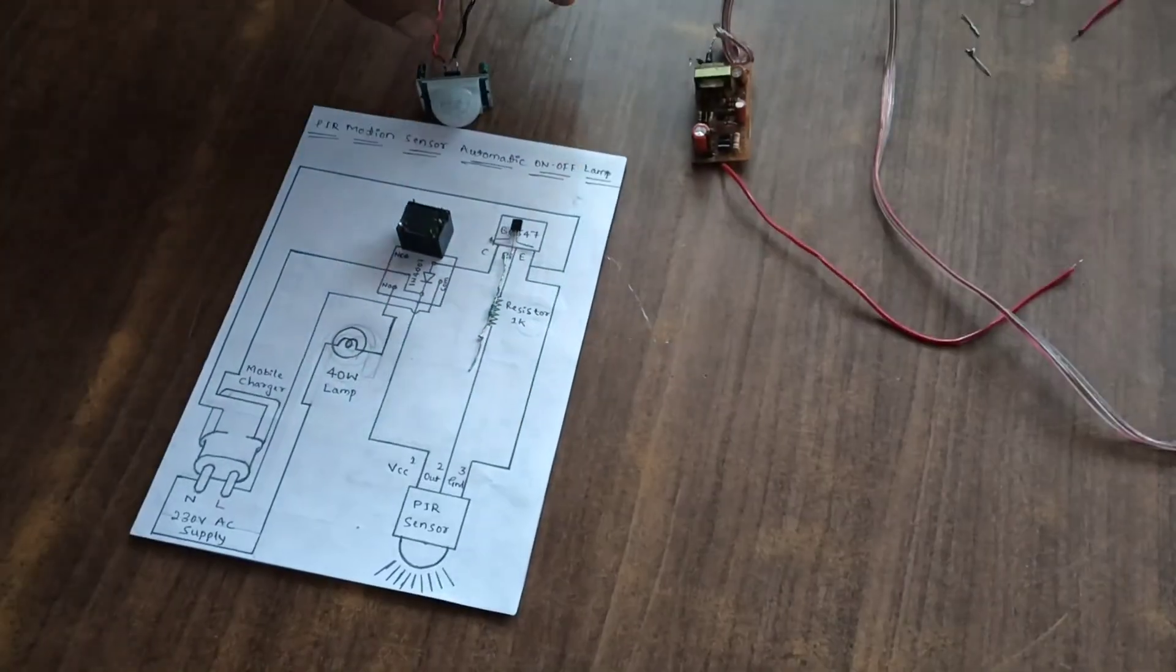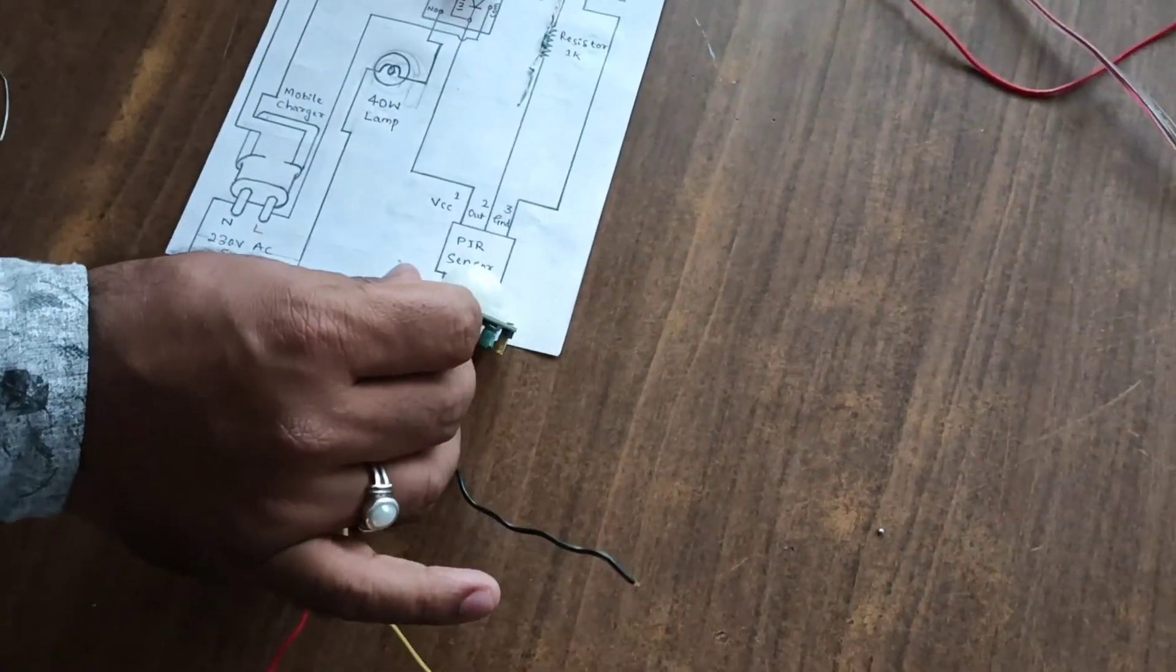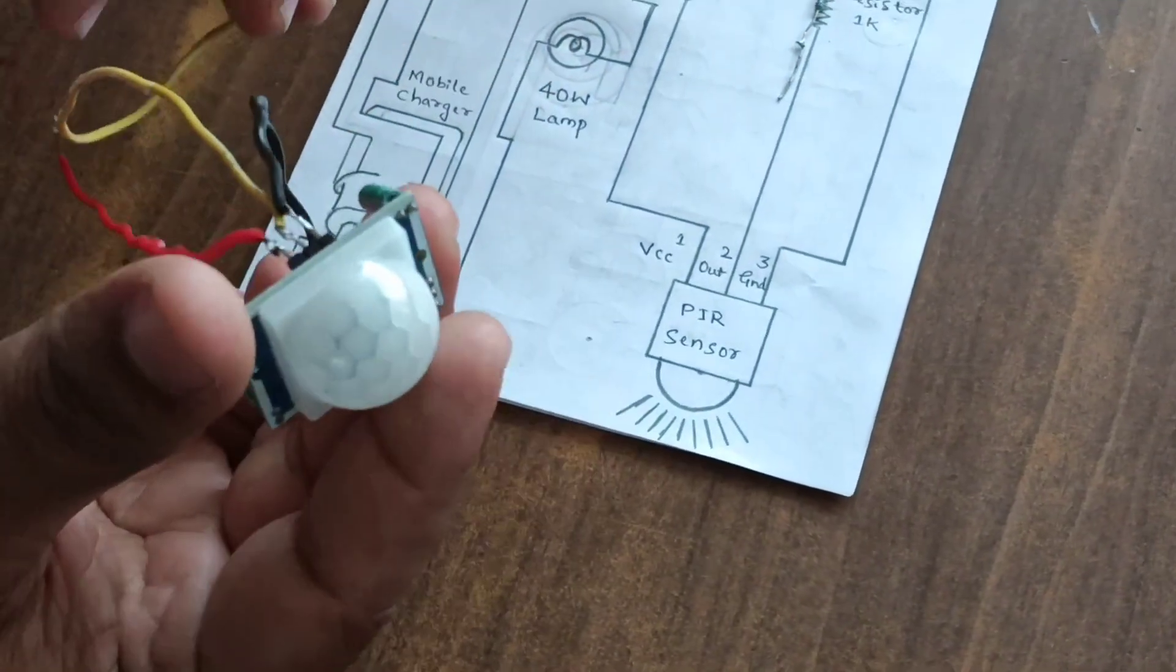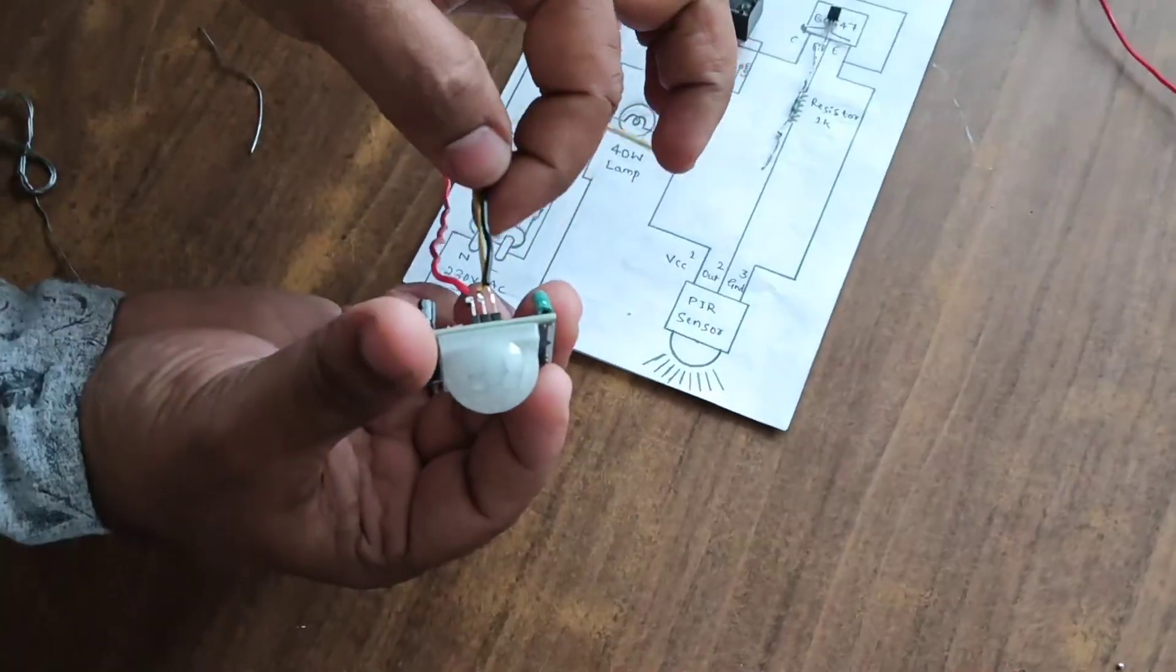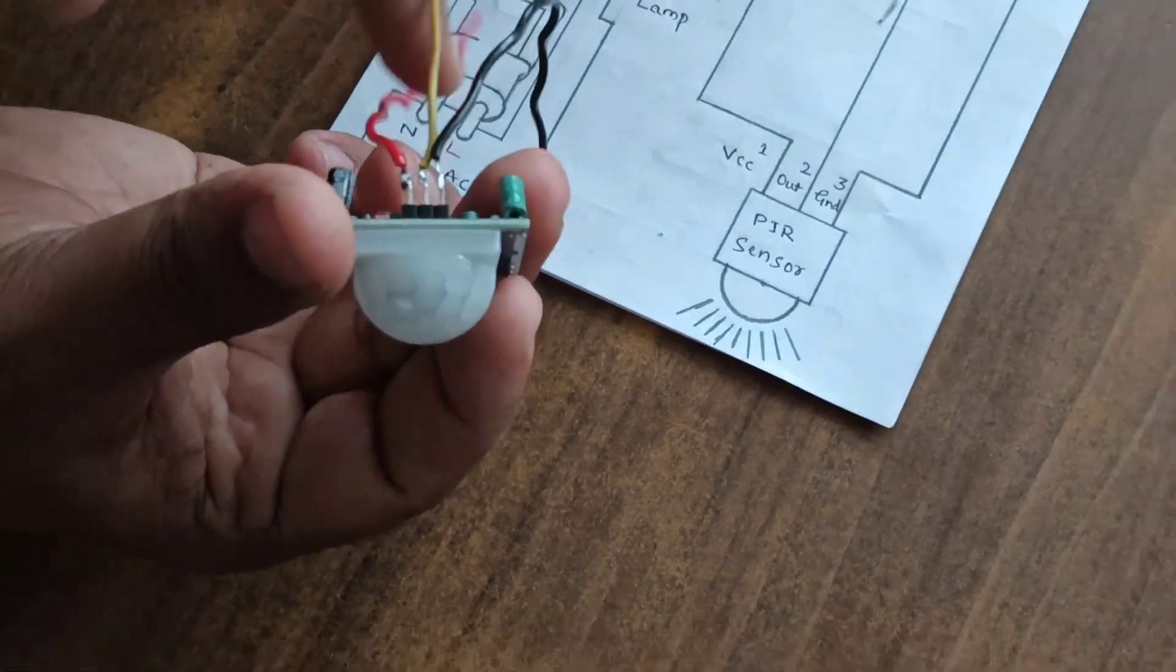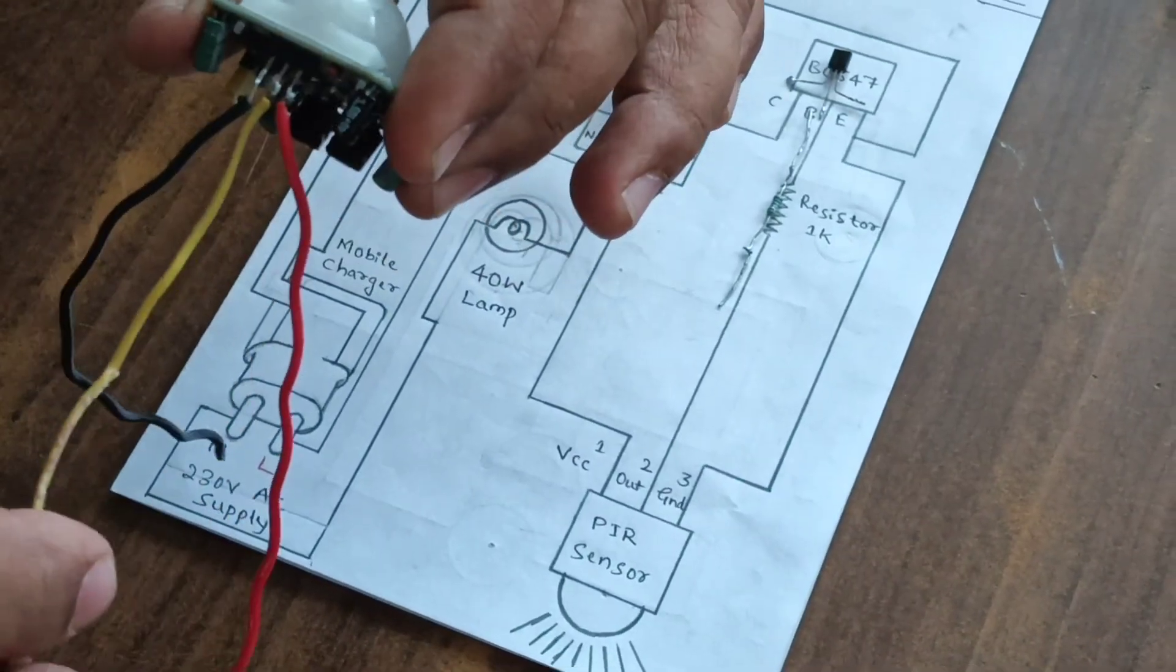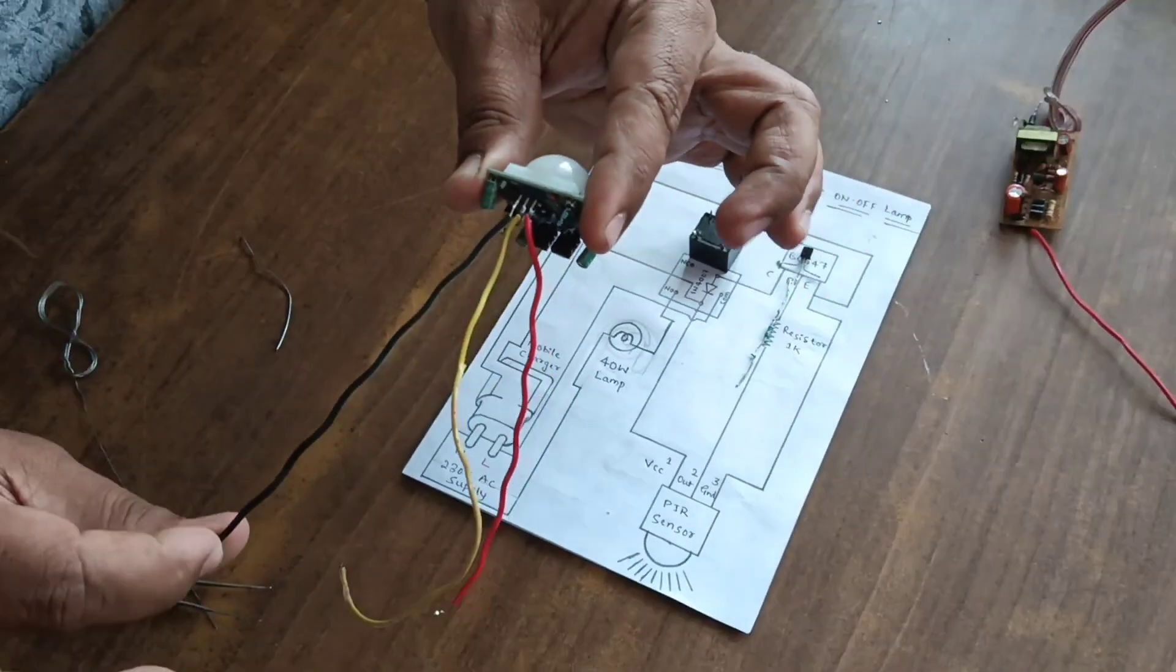Next, PIR motion sensor. This is the PIR motion sensor. In this, three connecting leads are there. One is VCC, middle one is output, and this black color wire is ground.